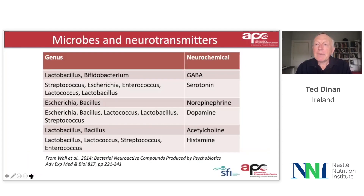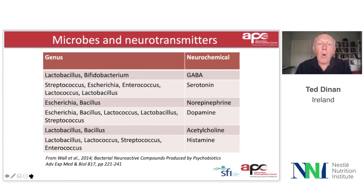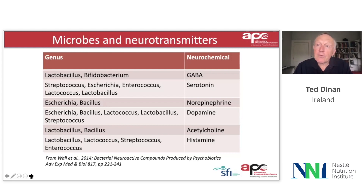When we look at bacteria within the intestine of a child, many of these bacteria are capable of producing neurotransmitters. In fact, all of the common neurotransmitters we see in the child's brain can be produced by microbes within the gut. I'm not suggesting that these neurotransmitters travel to the brain directly, but they can influence aspects of the nervous system around the gut, which in turn can influence brain function. Neurotransmitters like GABA, serotonin, noradrenaline, and dopamine are all manufactured by microbes within the gut.